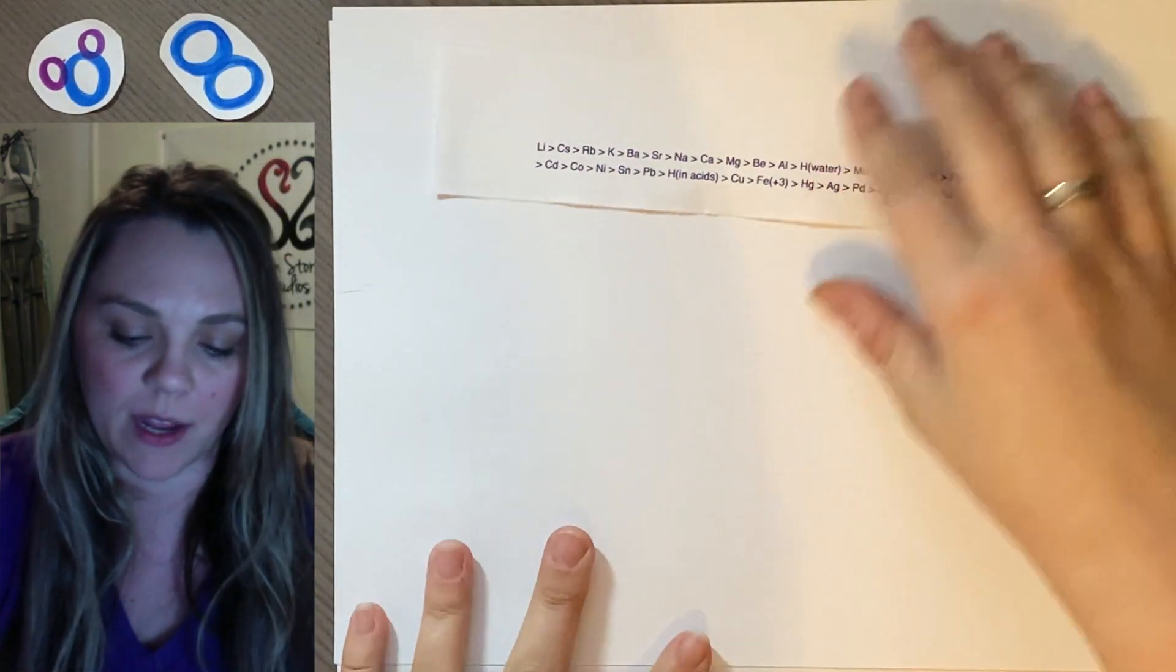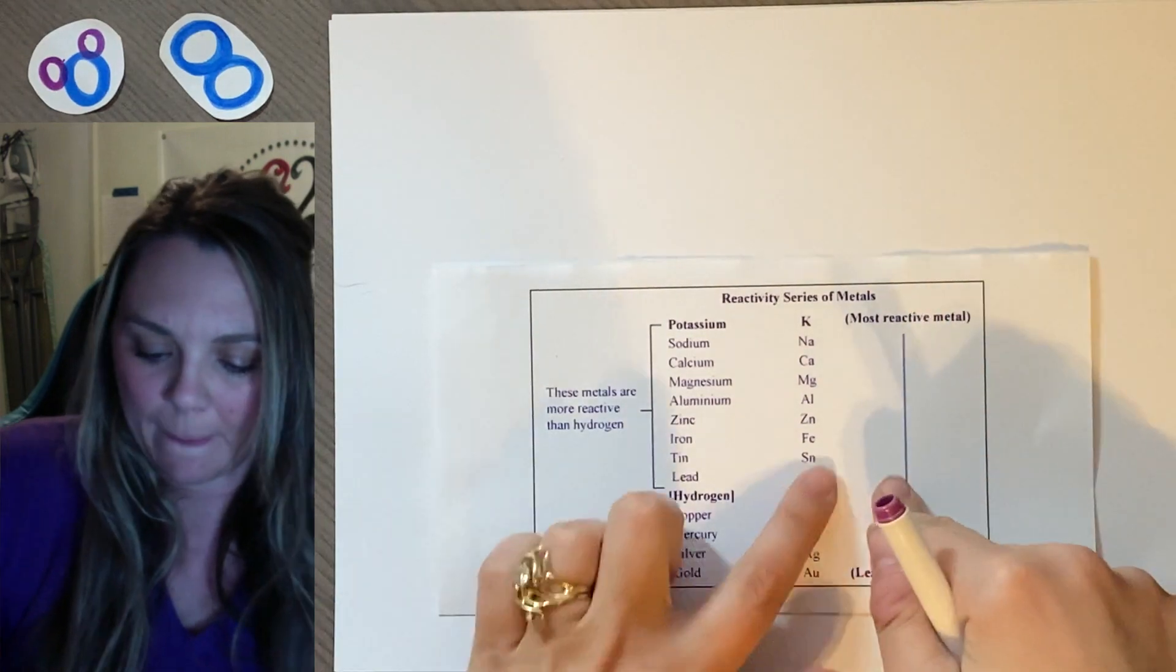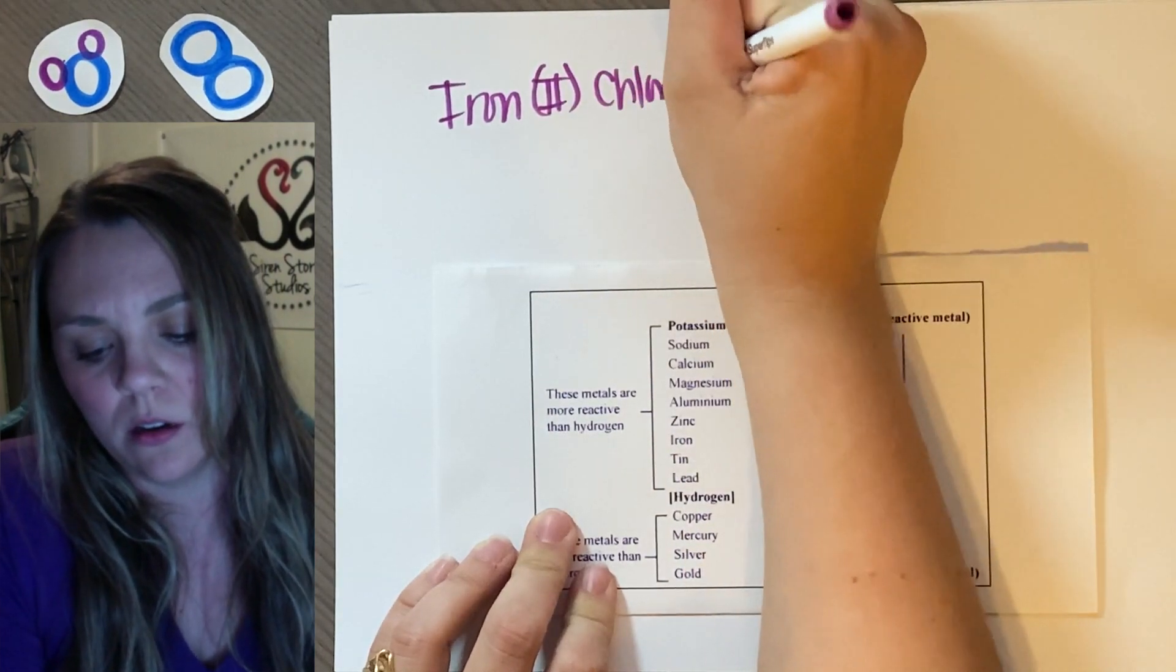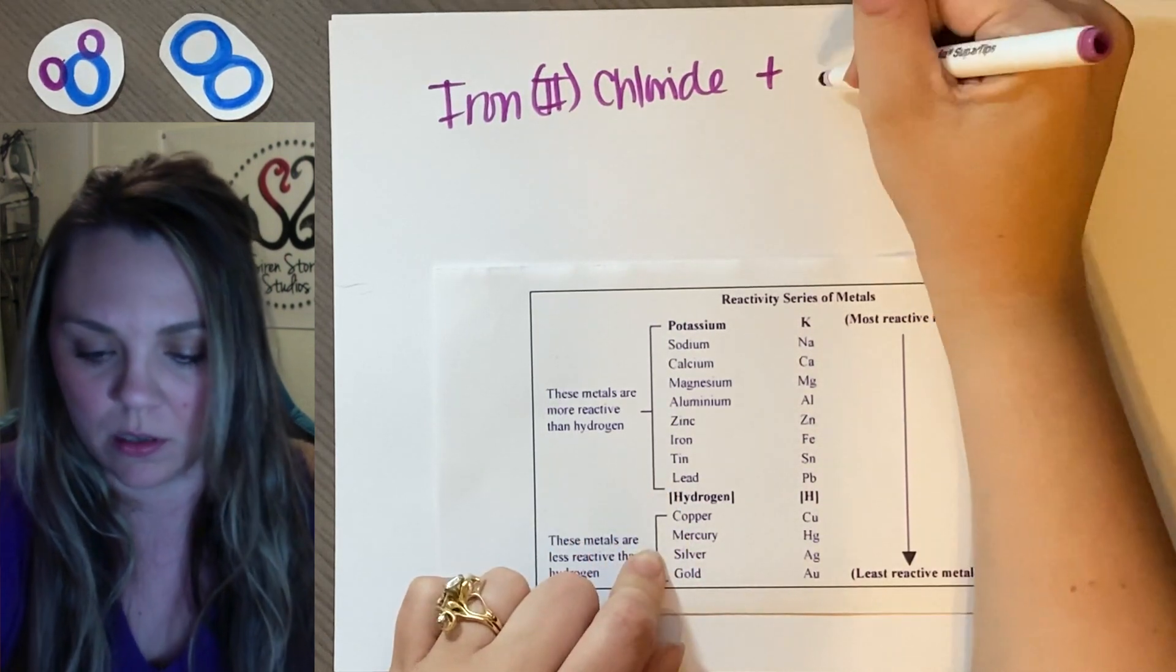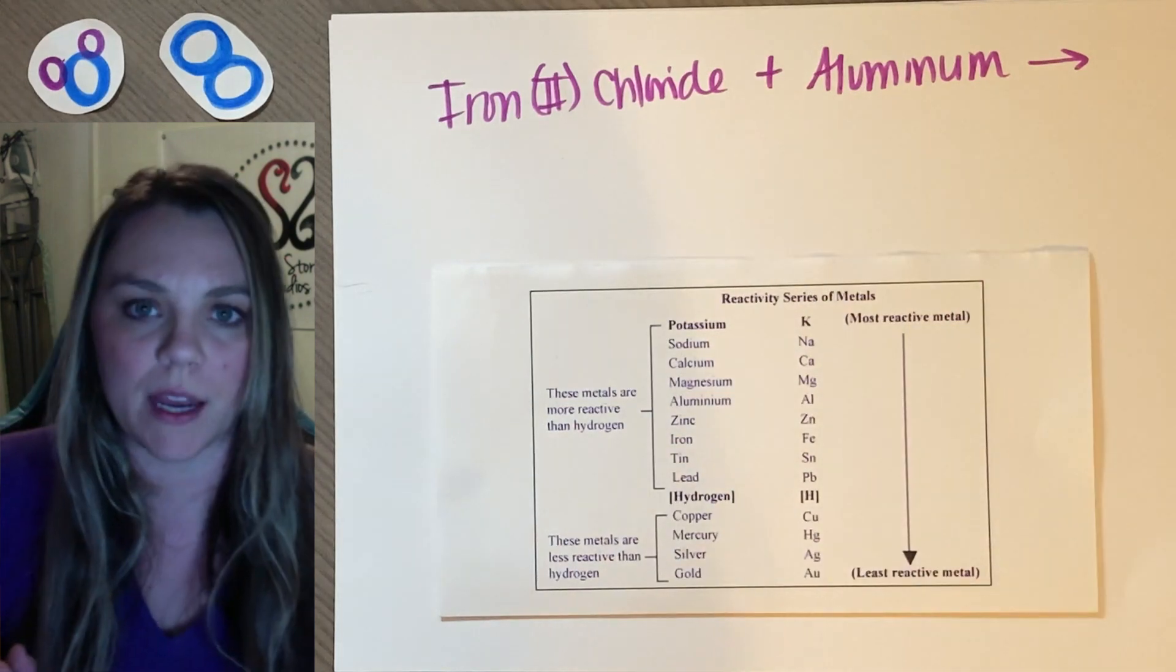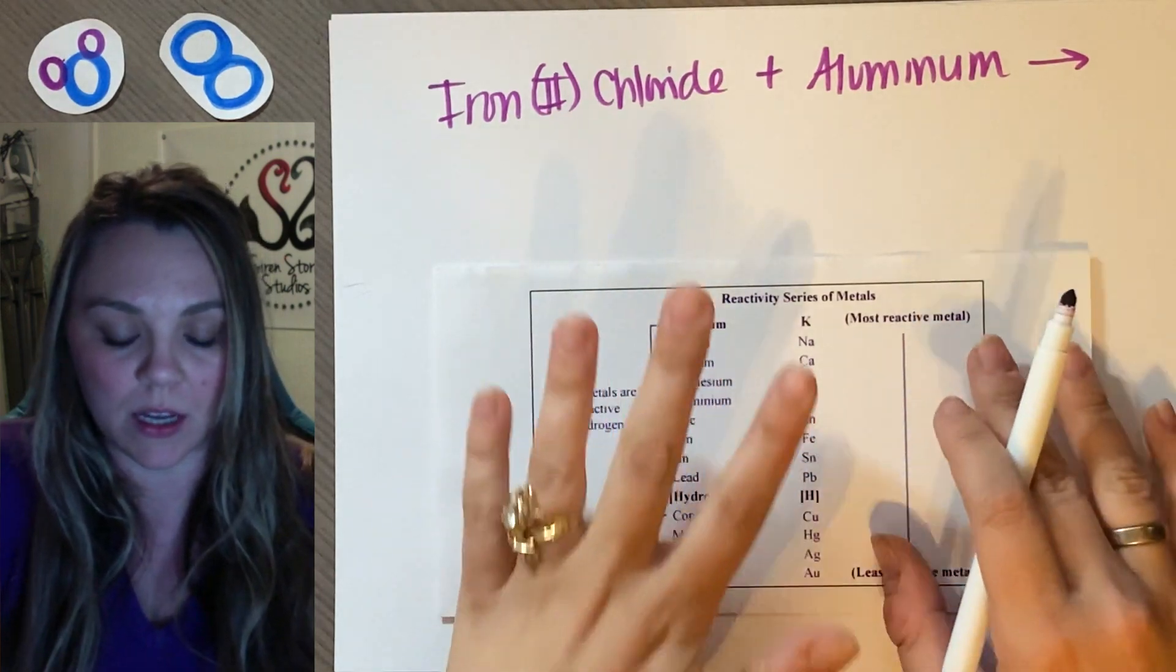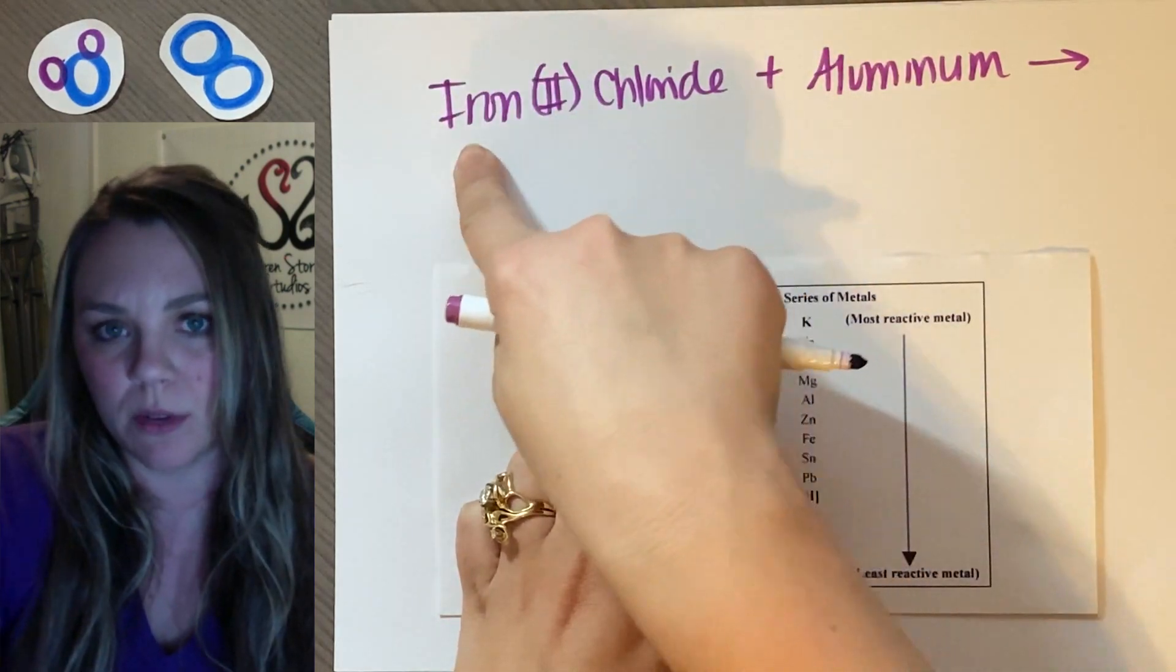So why it matters is when I have a single replacement reaction. So if I had, of course I didn't plan one, I'm coming up with one on the fly. So if I had like iron(II) chloride and I throw some aluminum in there. The first thing I have to do before I even say like, oh yeah, zip zip, I'm going to do my reaction, I have to figure out, is this reaction even going to happen? And the way I do is I look at this and I figure out which metal is most reactive.